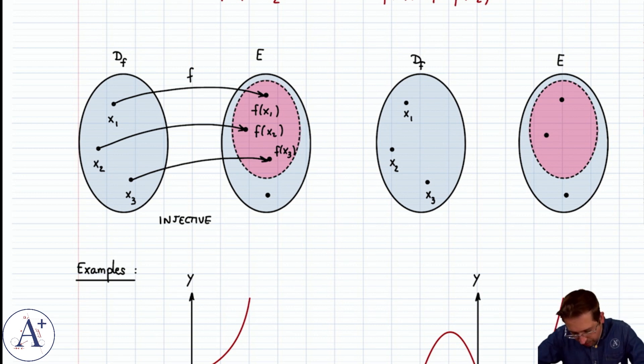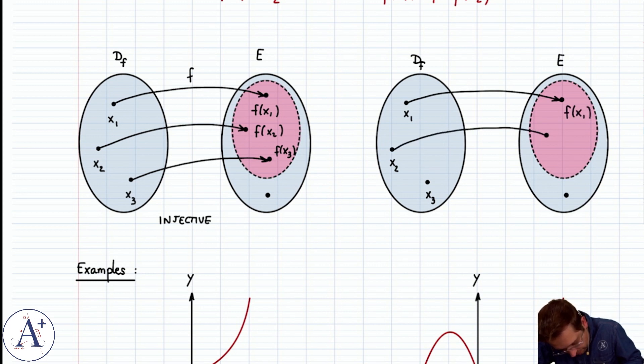Now let's draw an example of a function that would not be injective. So that's pretty easy. We just take maybe x1, map that over to f of x1, and then we take x2, map it over to this, and then we also map over x3. In other words, we're going to have f of x2 is equal to f of x3.